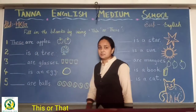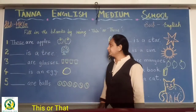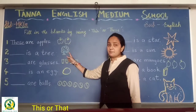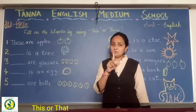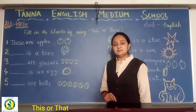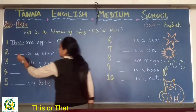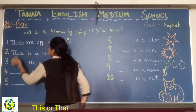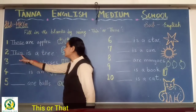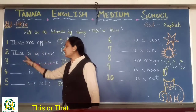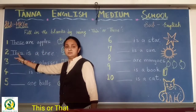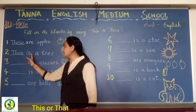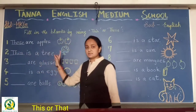Okay students, keep this also in mind. Now you see here a tree. How many trees are here? Only one. So what will you write there? 'This.' T-H-I-S. With 'this' we use 'is'. This is the tree.